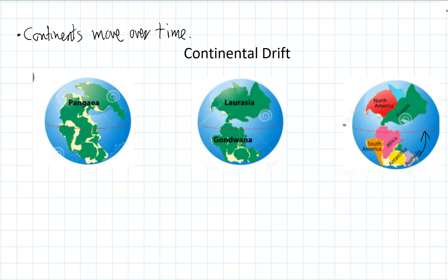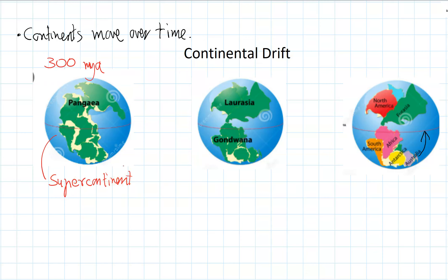Scientists have also discovered that back in the past, the continents weren't as they are today — they were actually joined together into supercontinents. Pangaea was about 300 million years ago, a supercontinent which contained all of the continents joined together into one. Then Pangaea broke up, starting about 150 million years ago. The southern half of Pangaea we call Gondwana, which contains South America, Africa, Antarctica, and Australia.